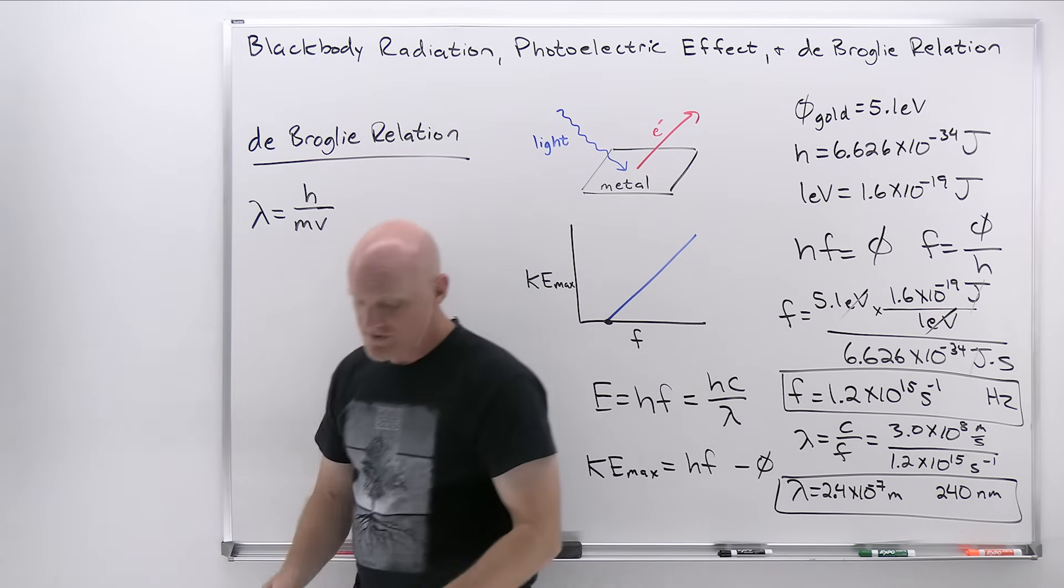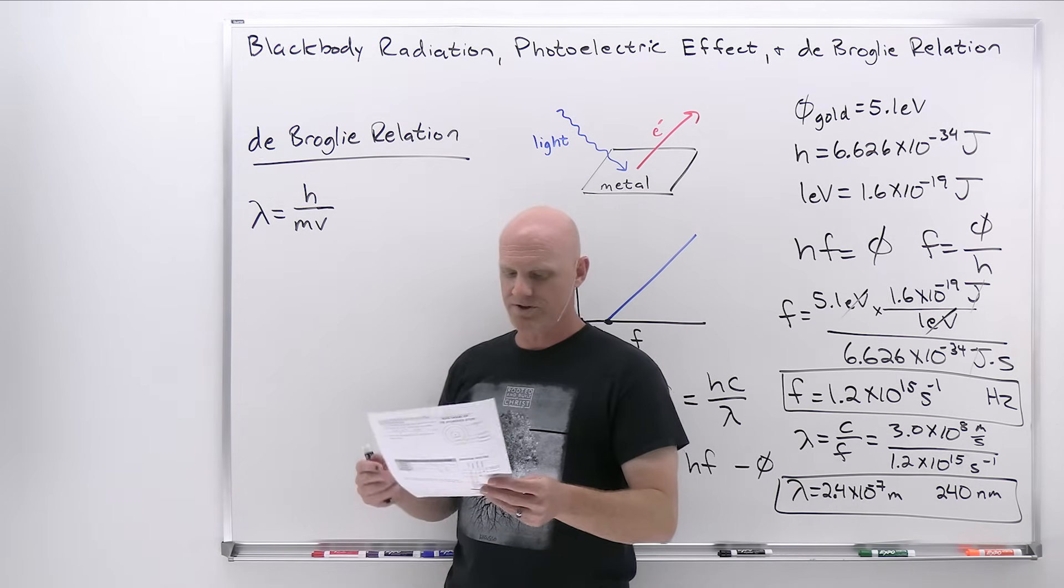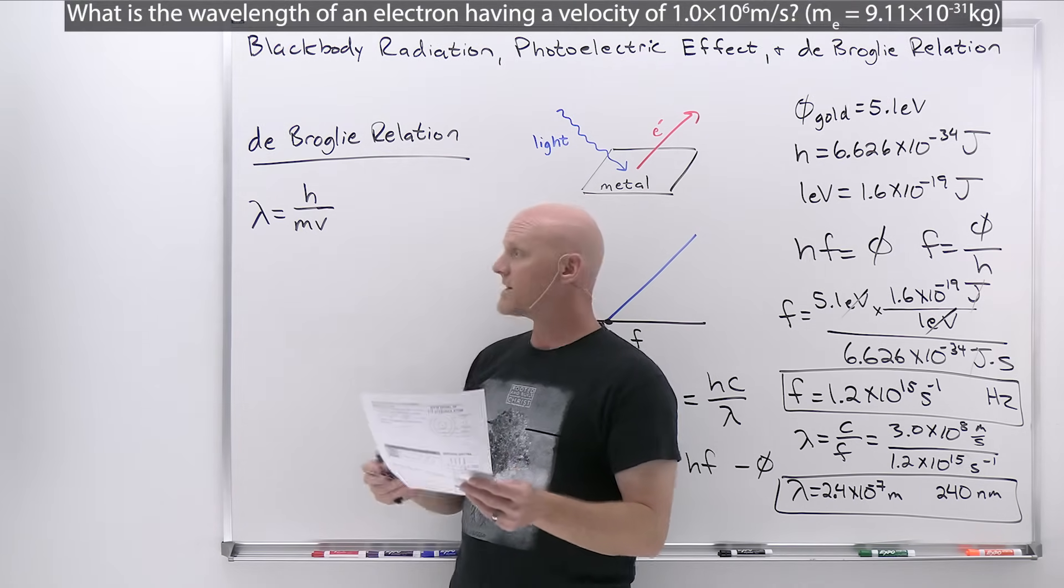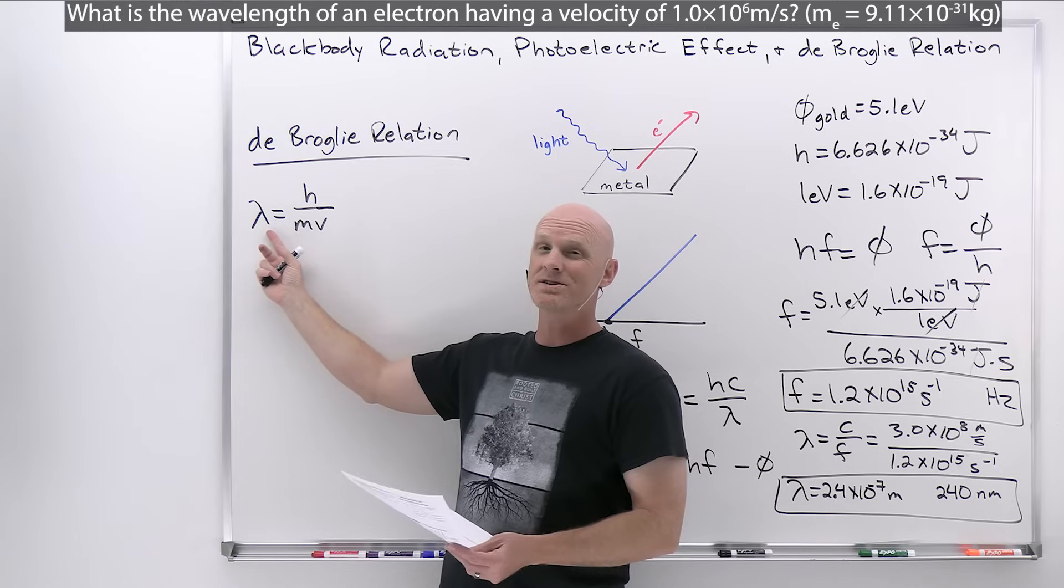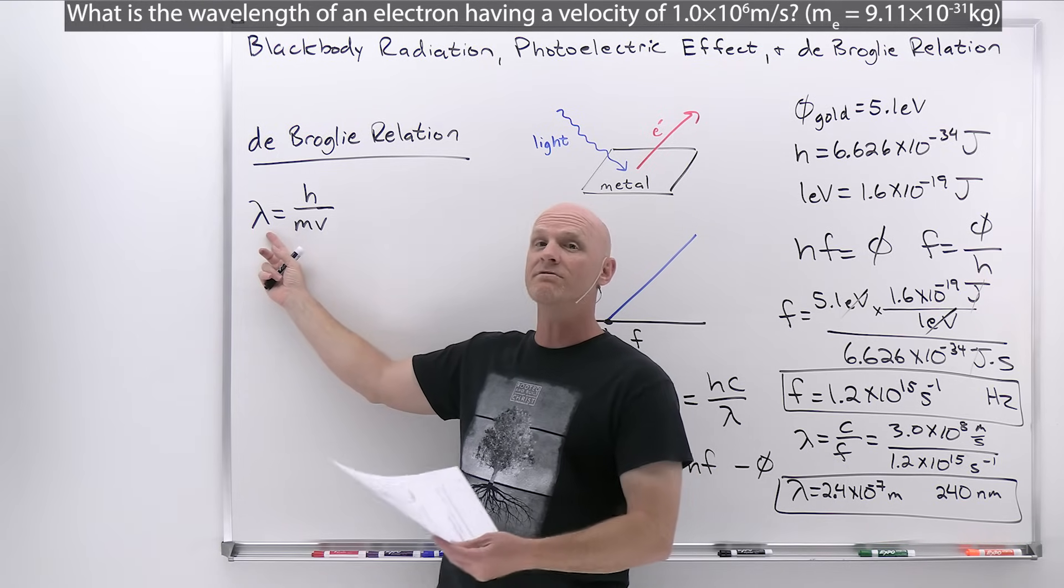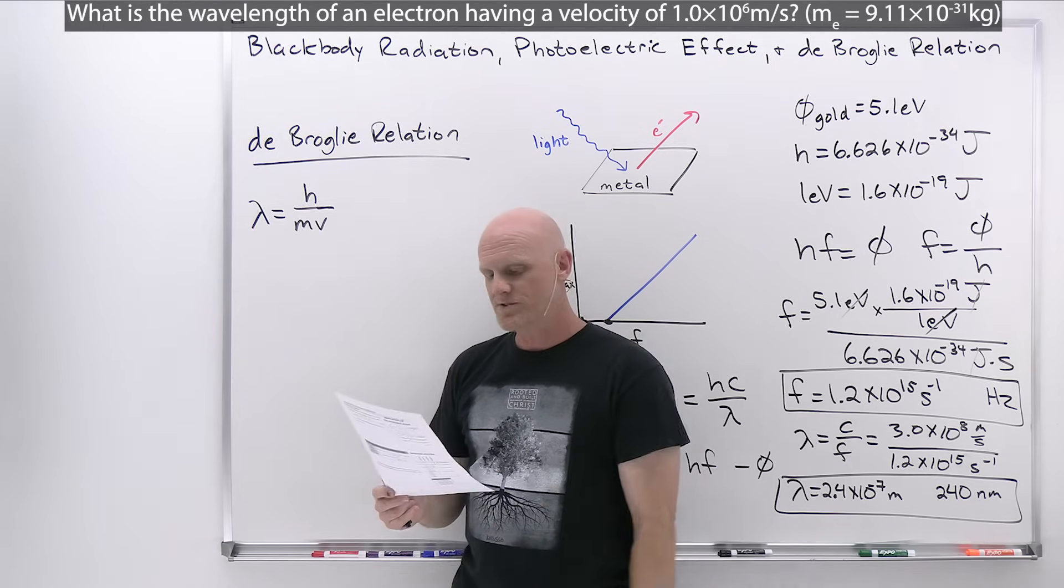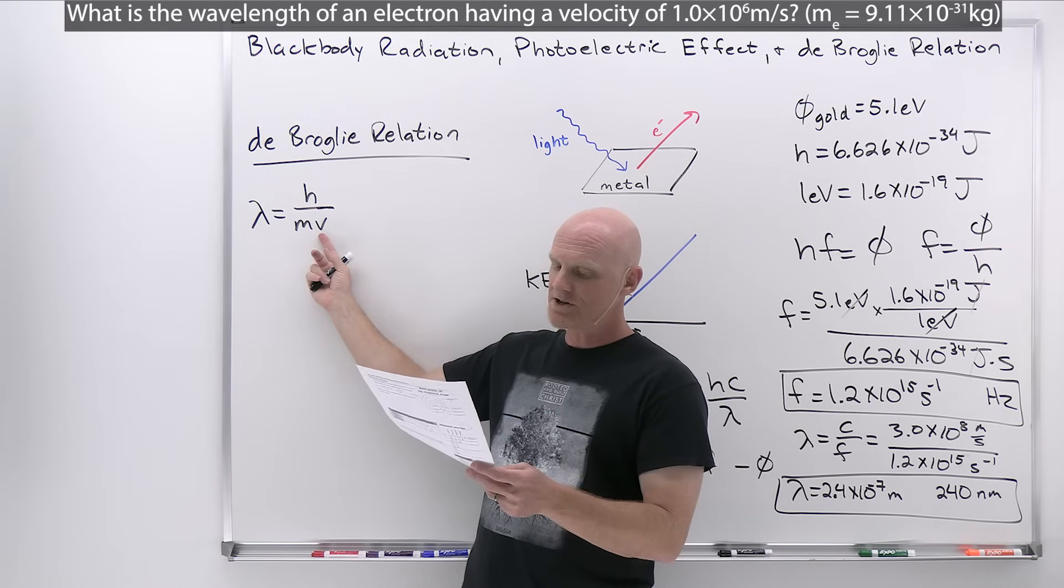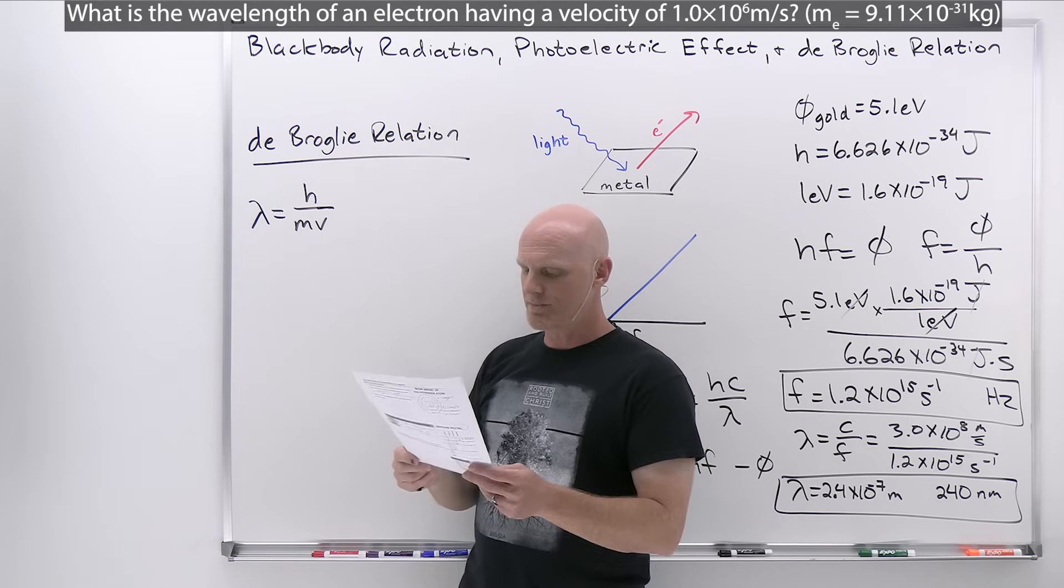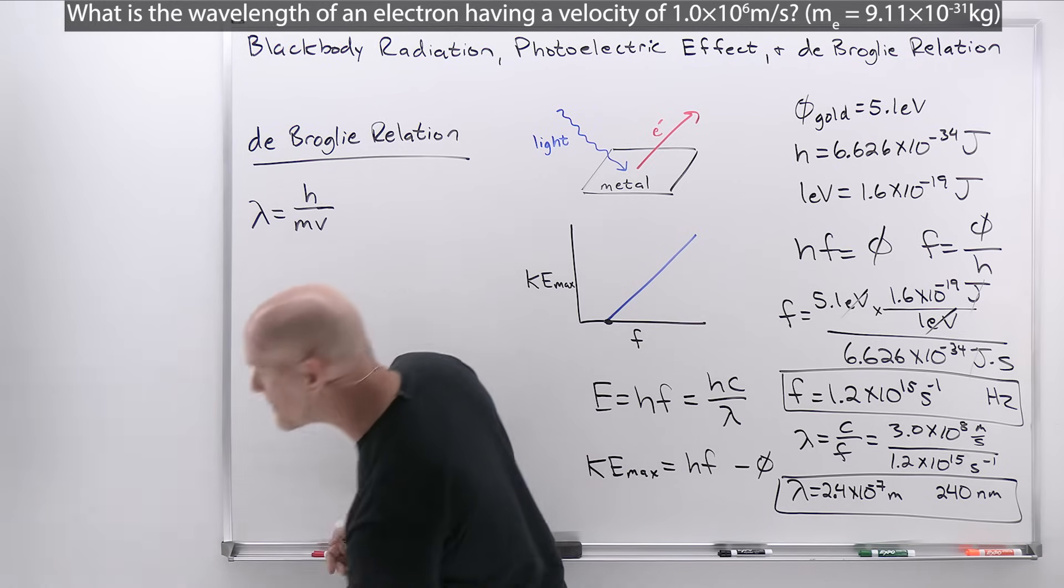So we can use this simply in a plug and chug, and that's what we're going to do here. The question is, what is the wavelength of an electron, and the key is now that we're talking about matter, I should clue you in using the de Broglie relation to find the wavelength of matter, not light. What is the wavelength of an electron having a velocity of 1.0 times 10 to the 6 meters per second, and the mass of the electron is given as 9.11 times 10 to the minus 31 kilograms.